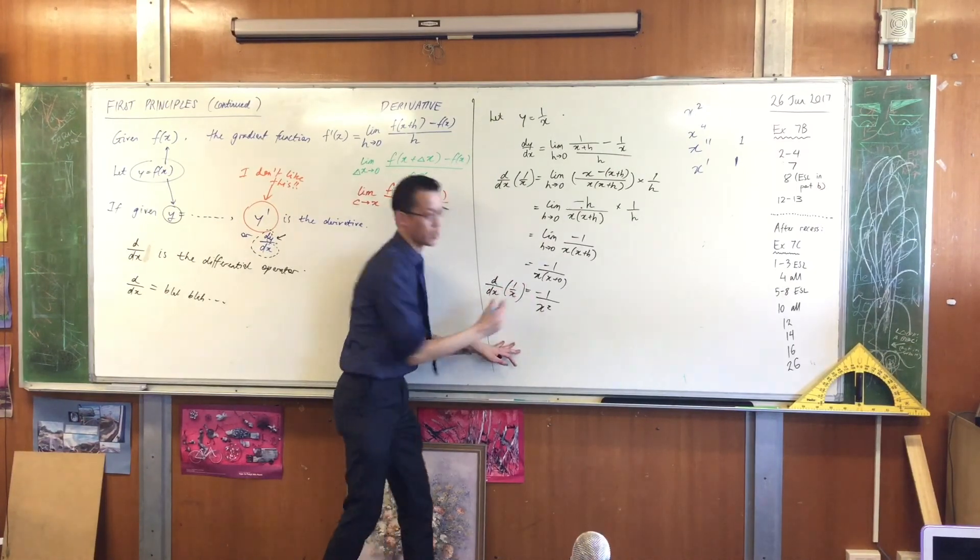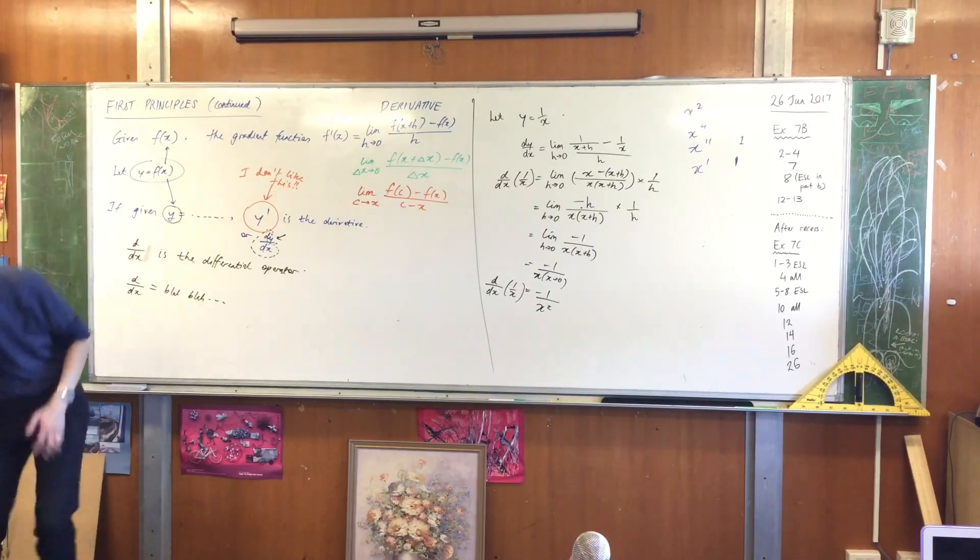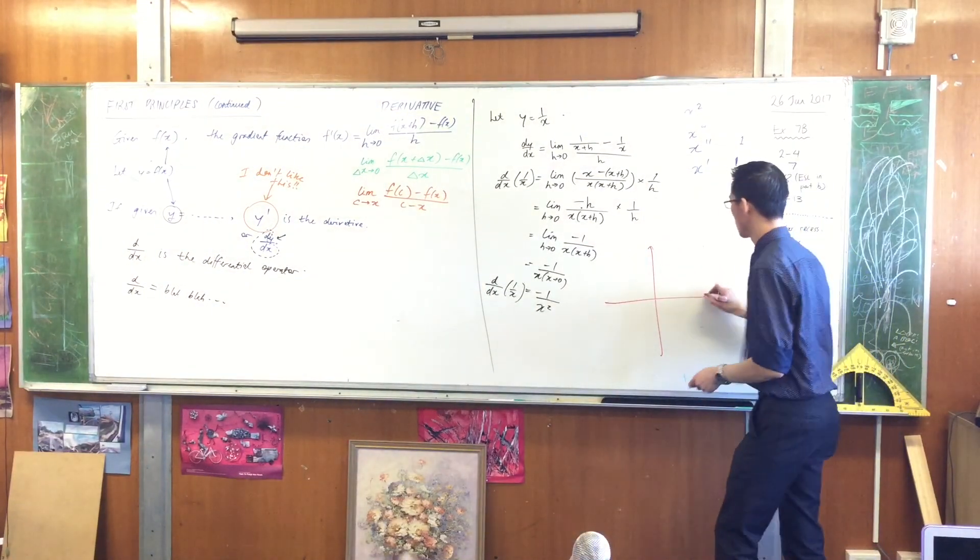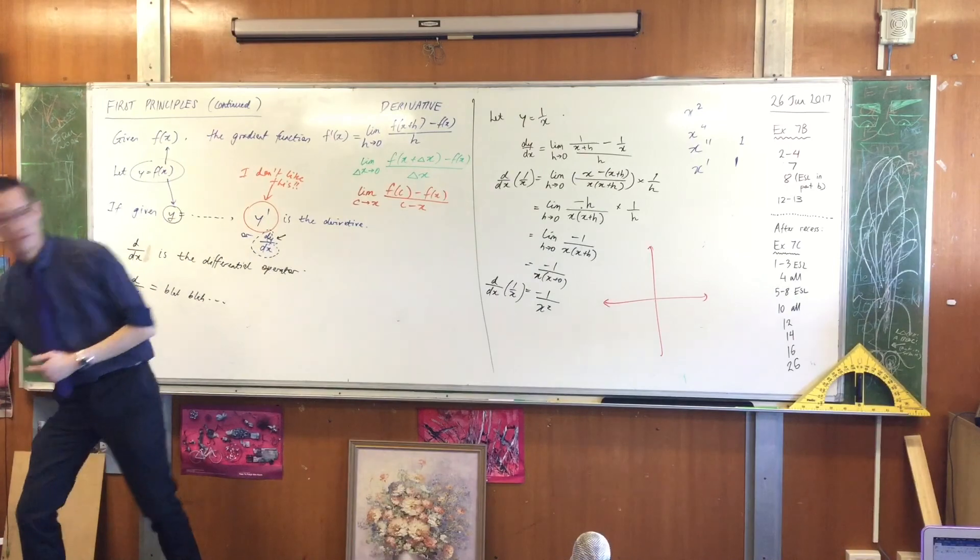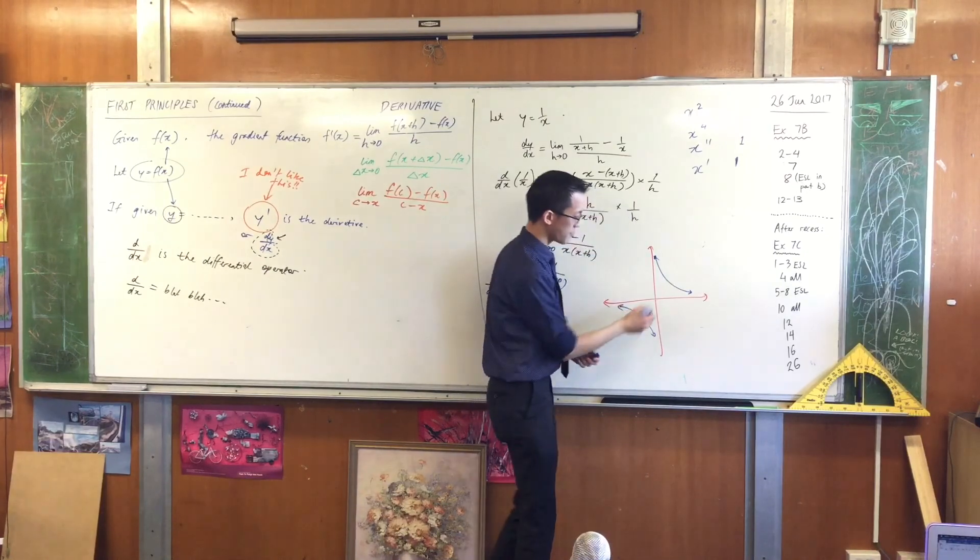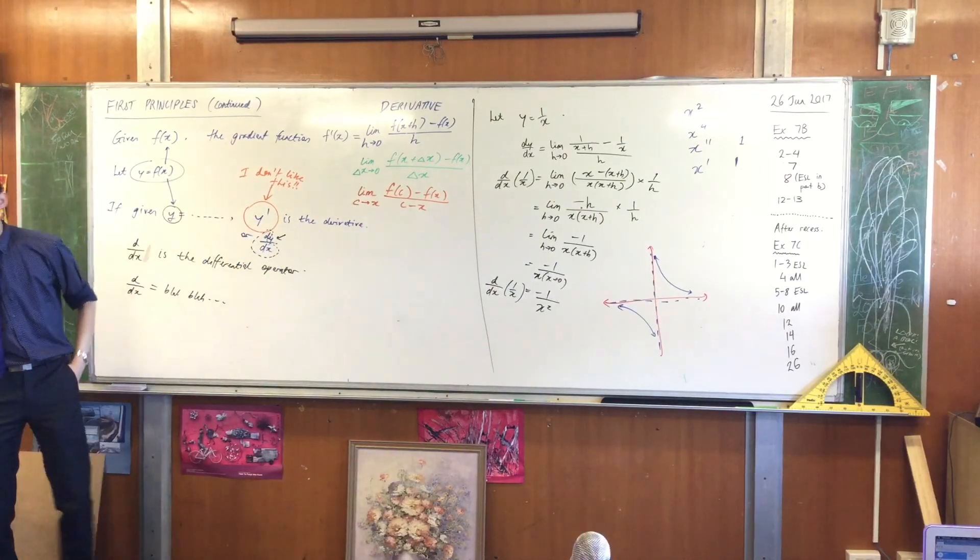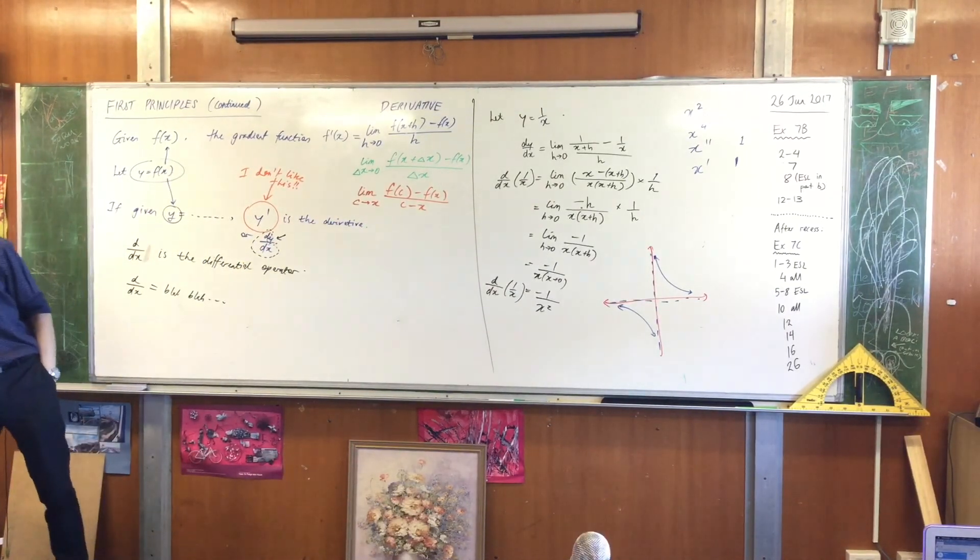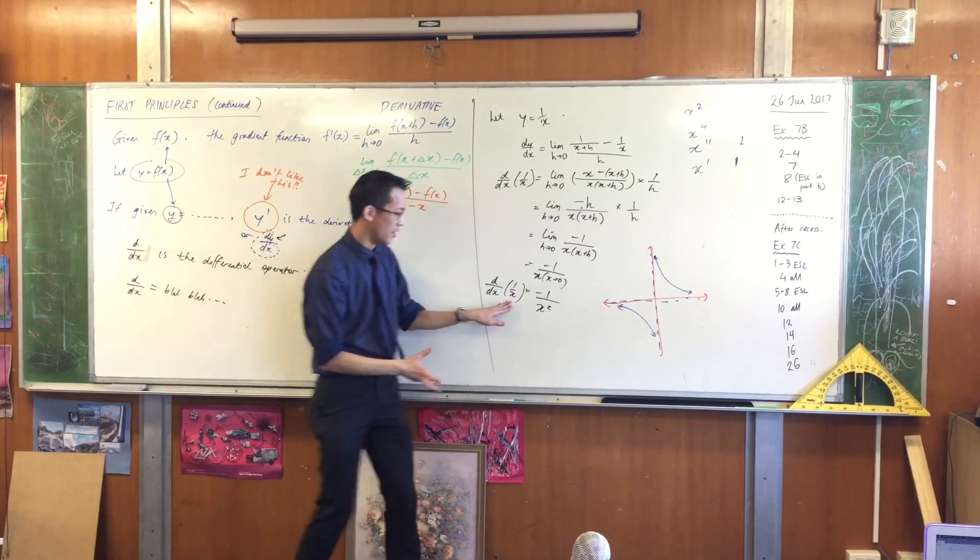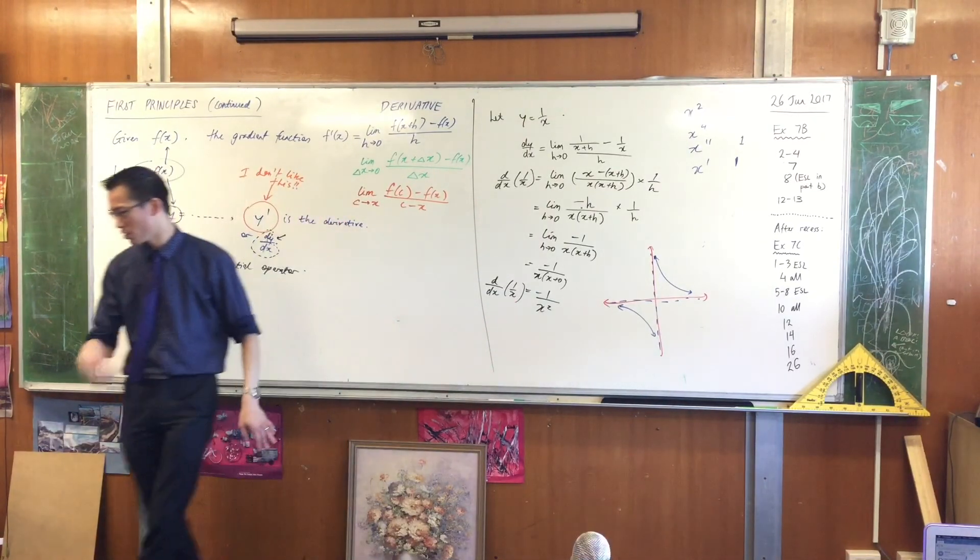But, I want us to think, what does this answer mean? Can you help me just draw like a rough 1 over x graph? Just draw it beside here. It doesn't have to be huge. You can get the idea. Now remember what it is that we've just found out. This, apparently, is the gradient function, the derivative, of this guy over here.